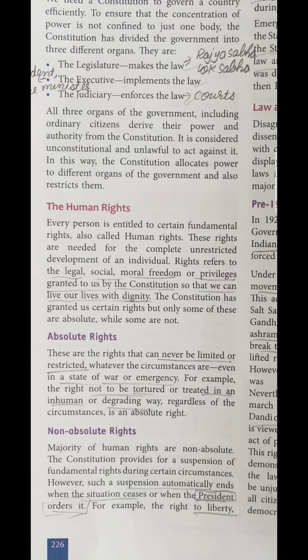The first type is absolute rights. Absolute rights are those rights which can never be changed, limited, or restricted — not even in times of emergency or war. For example, the right not to be tortured or treated in an inhuman or degraded way is considered an absolute right. Even in an emergency or war, no person has the authority to degrade the moral value of a citizen.